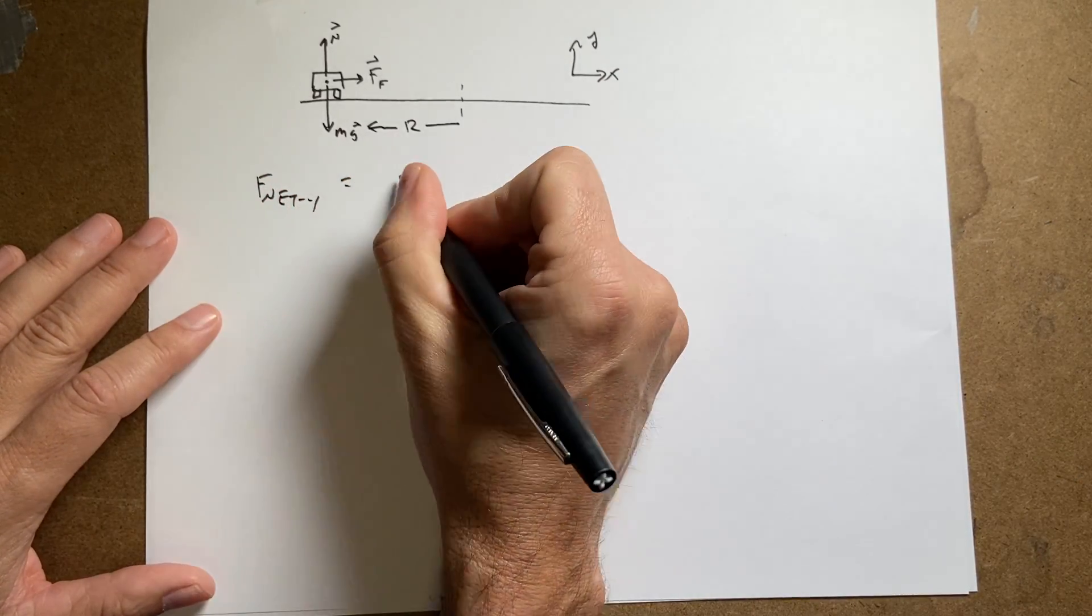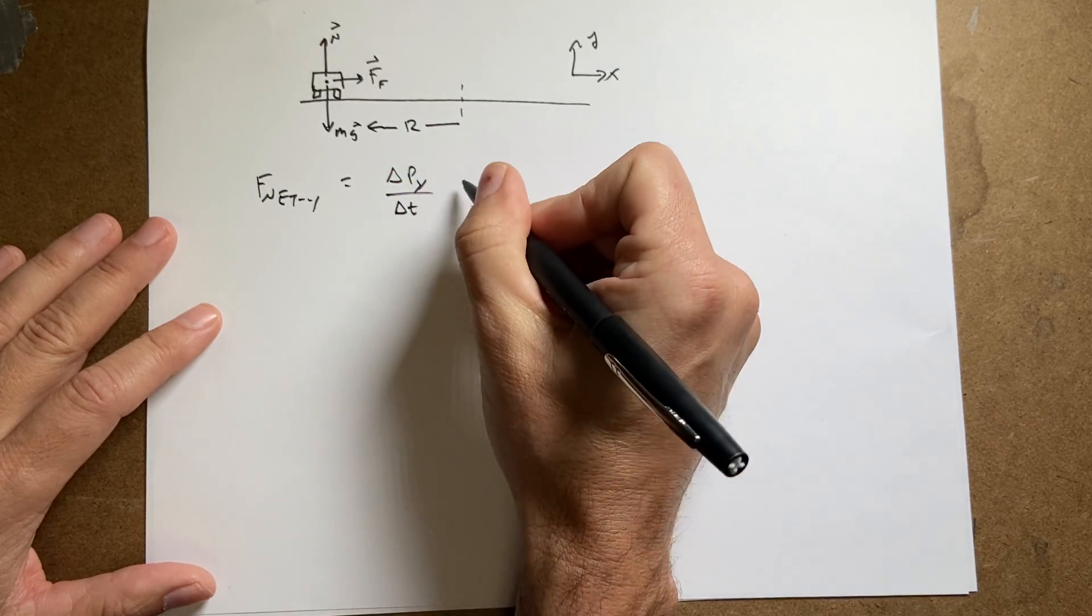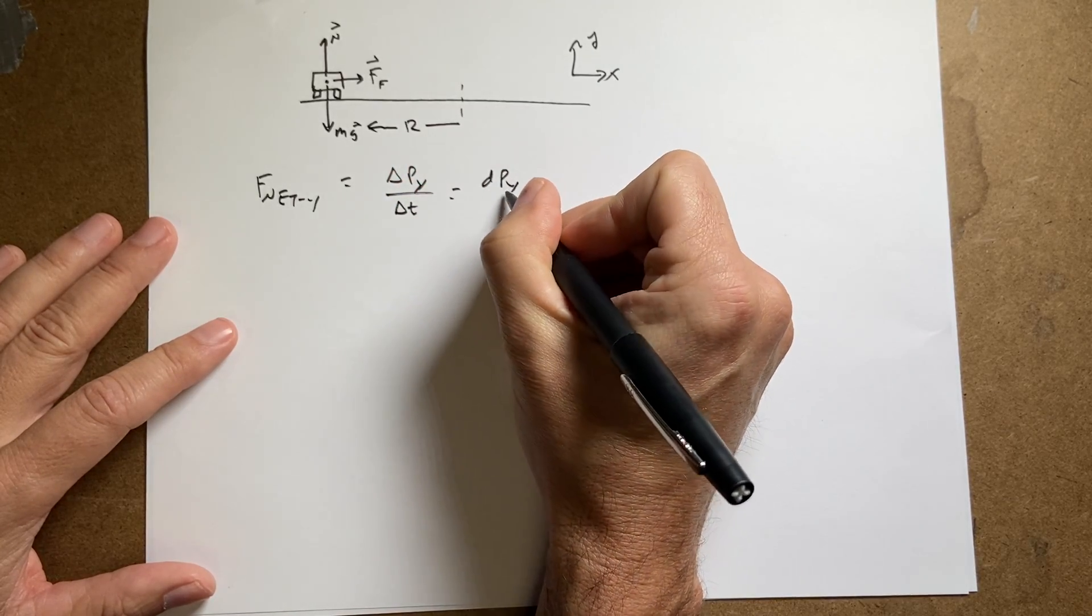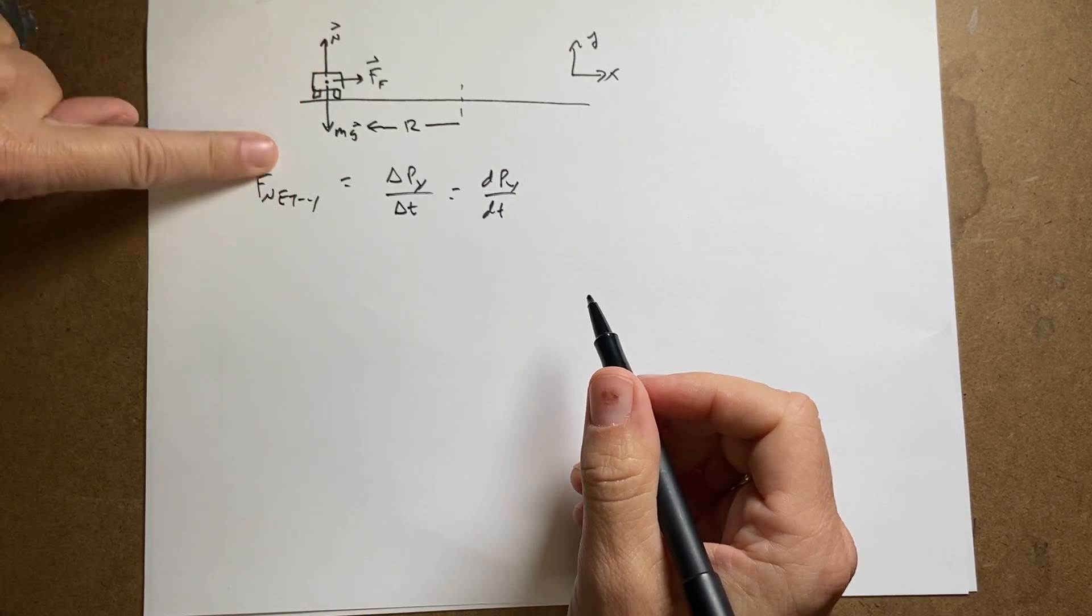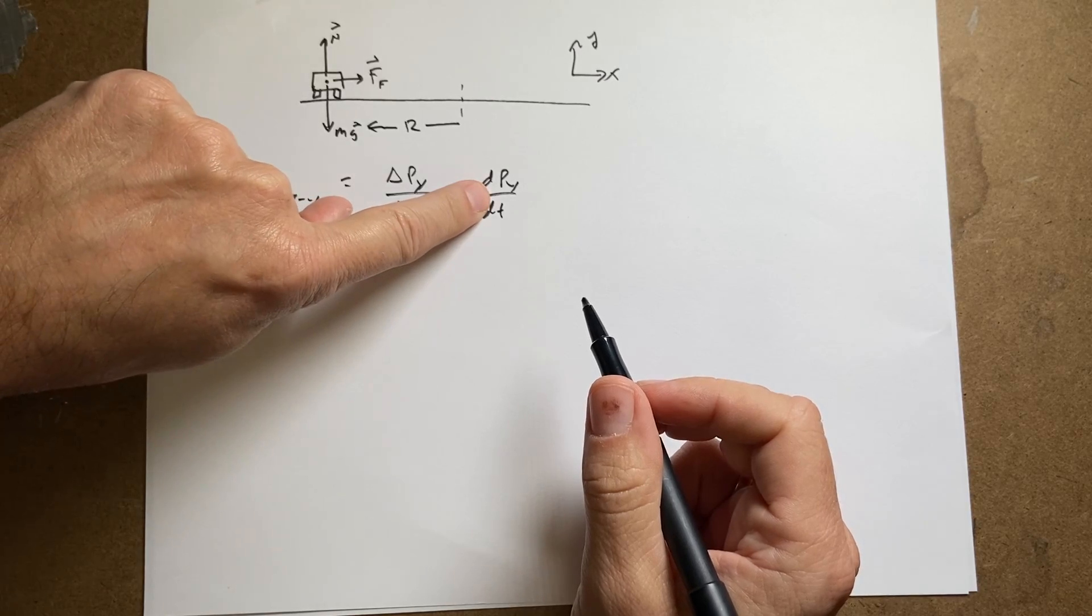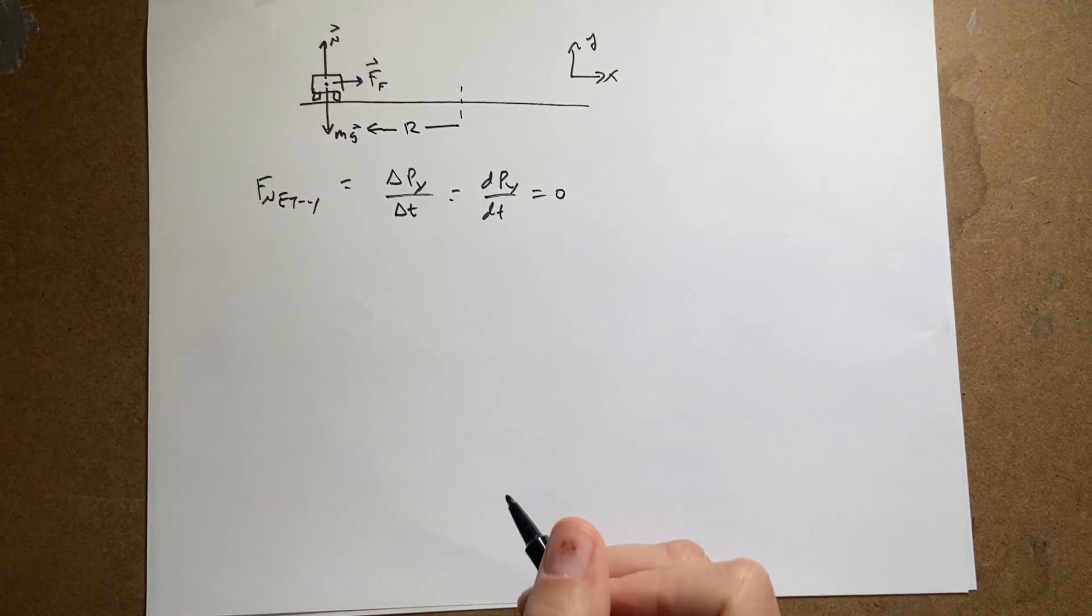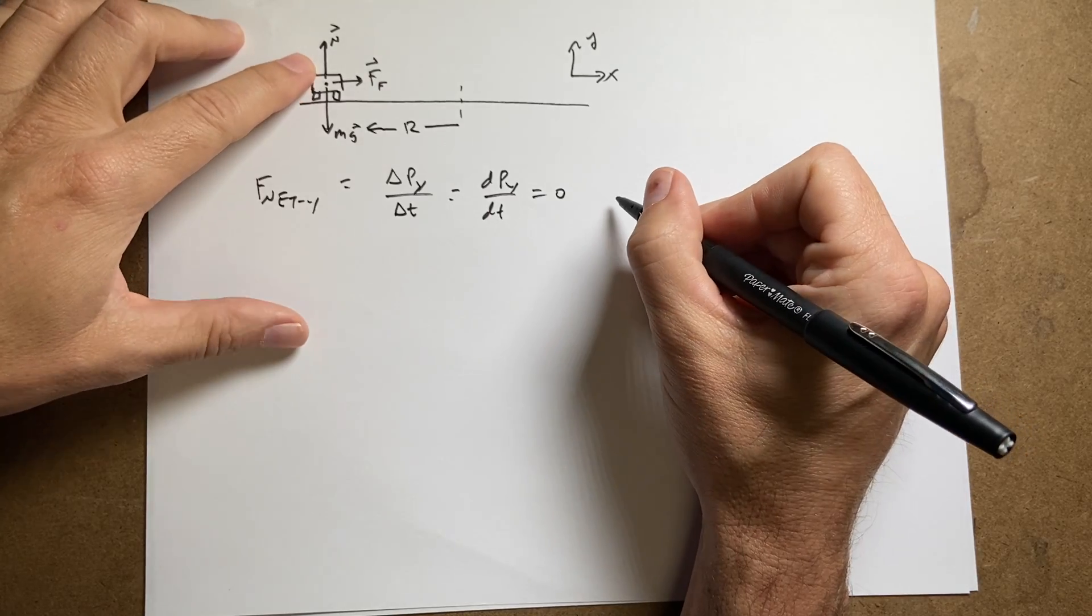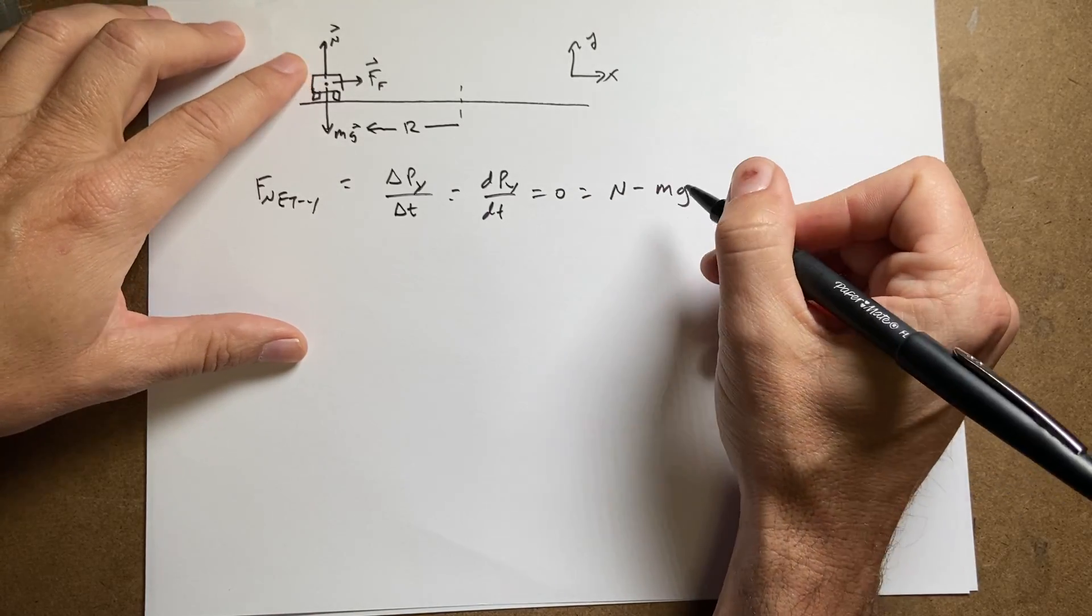So first I'm going to write the momentum principle in the y direction. F net y is the change in momentum in the y direction over the change in time. Or you could write that as dpy/dt. But either way, if the car is on level ground and it's not accelerating up or down, then the change in momentum in the y direction is zero. So that means the net force in the y direction is zero. That means that n minus mg is equal to zero.